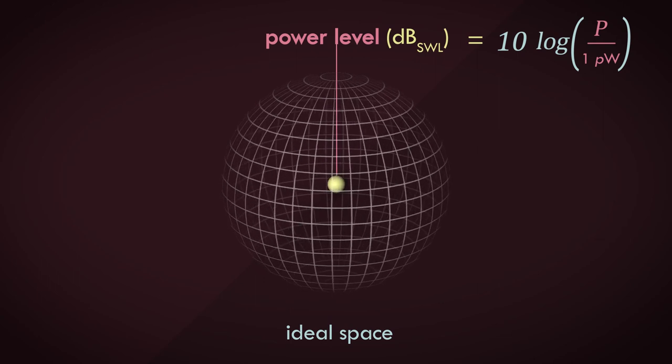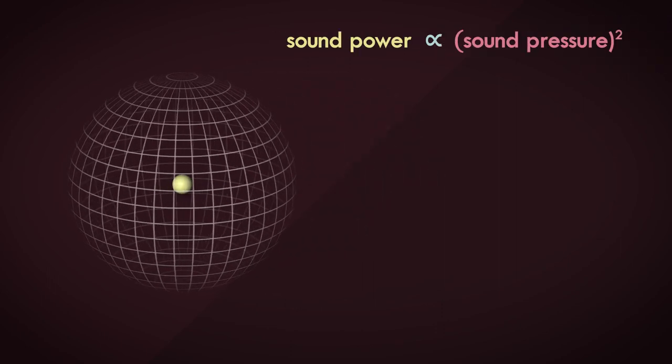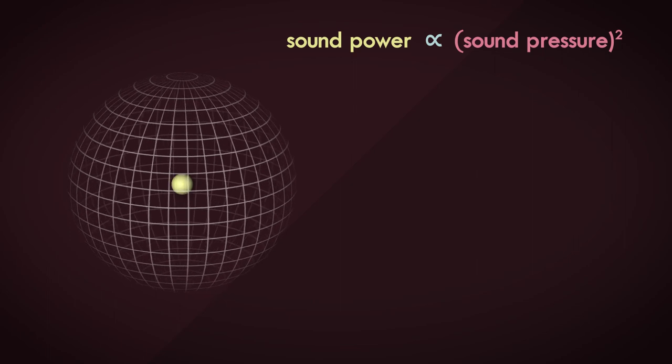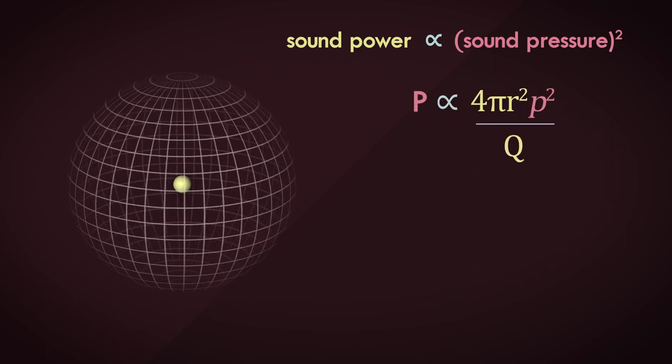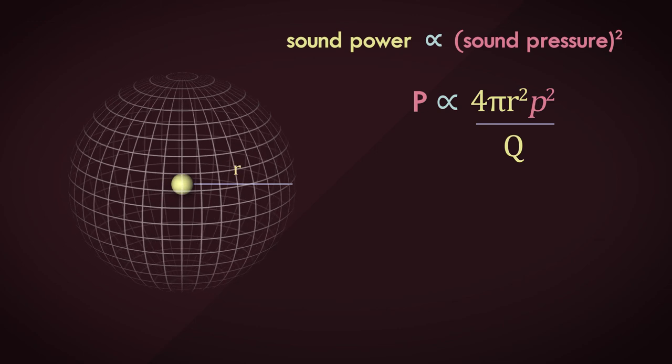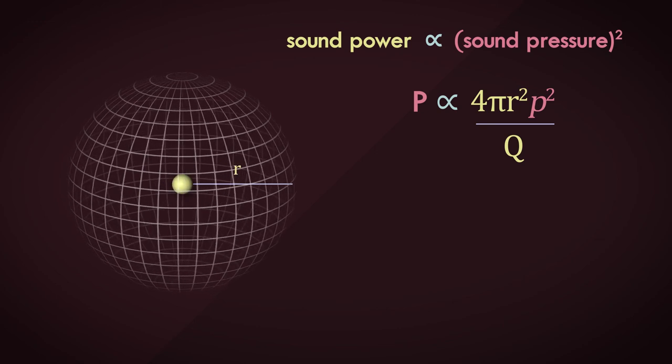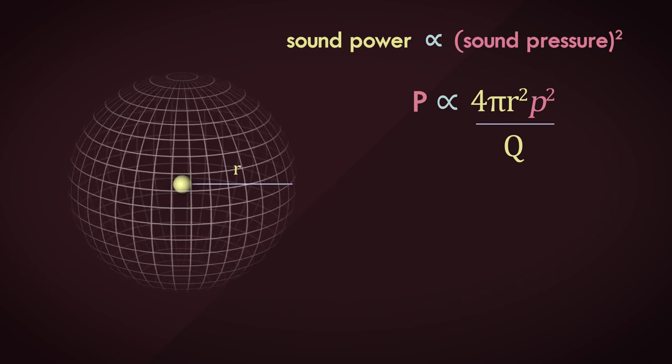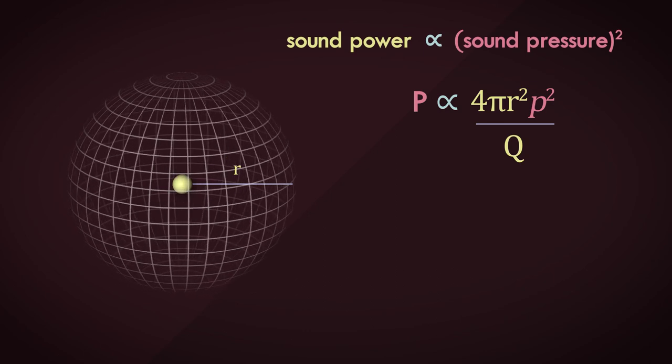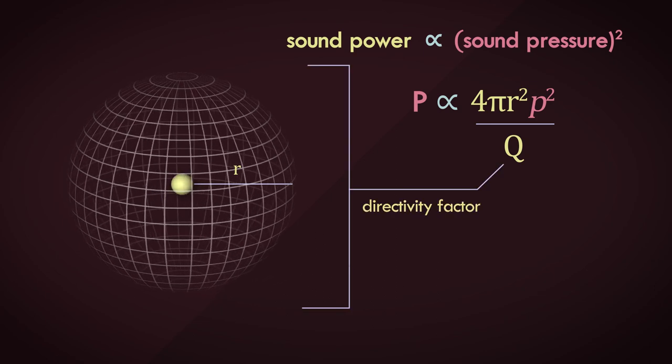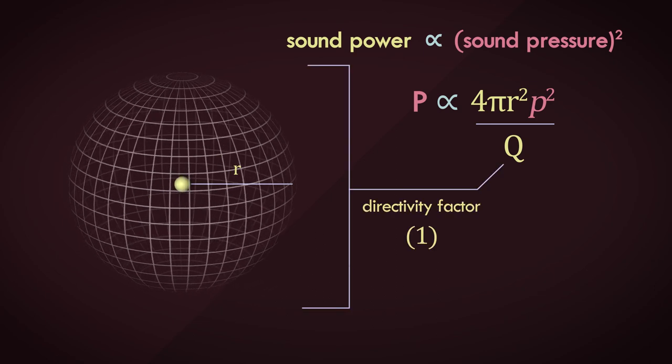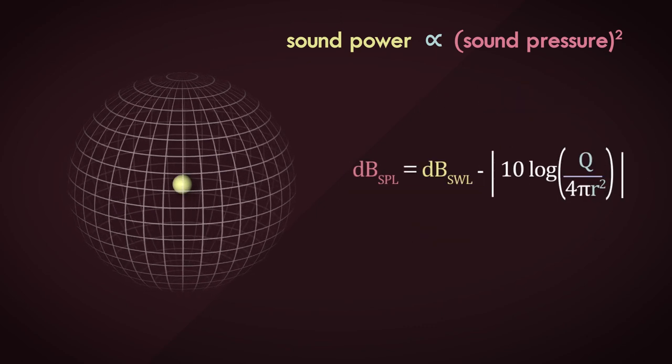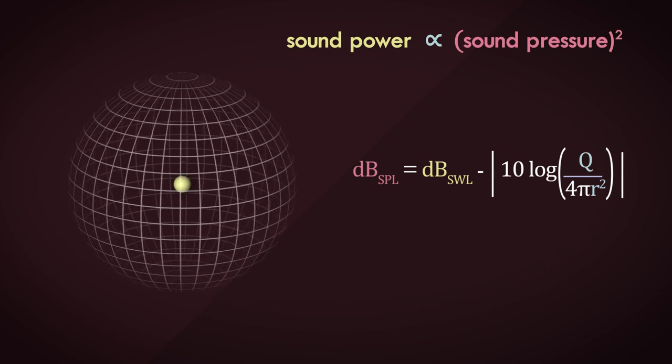We'll not get into that, but we know that sound power is directly proportional to the square of the sound pressure. Let's bring back a couple of constant terms that were ignored. Here, r is the distance from the source, and 4πr² is actually the area of a sphere. We'll see how this is important when we talk about sound intensity. And Q is called the directivity factor and is just 1 when we consider a spherical free field for sound propagation. And here's the amended formula for sound pressure level in decibels.